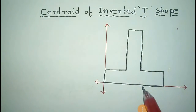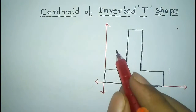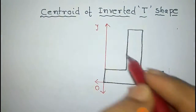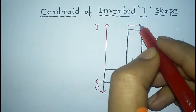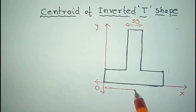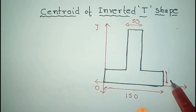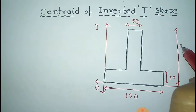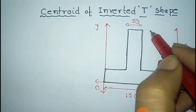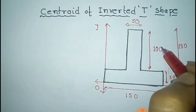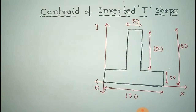We have to find the centroid of this inverted T-section. For this, we measure it with respect to these coordinate axes — the origin, the X-axis, and the Y-axis. The dimensions are given as: 50 units, 150 units, 50 units, and 150 units. So this remaining length is 150 minus 50, which is 100 units.